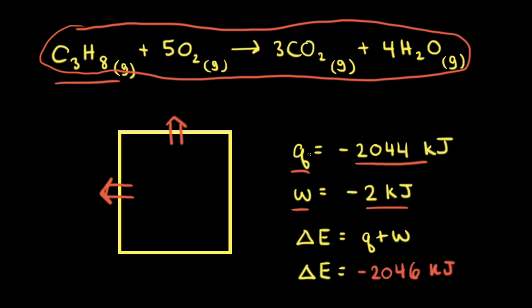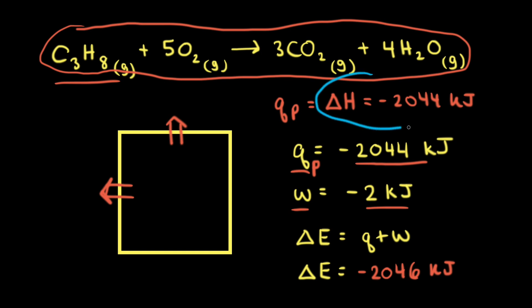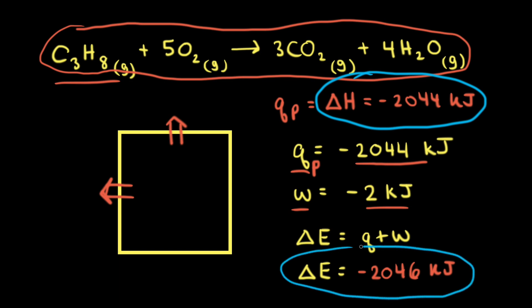Since this reaction was carried out under constant external pressure, we write Q sub p, which is the heat transferred at constant pressure, and that equals the change in enthalpy, symbolized by delta H. So the change in enthalpy for the combustion of propane equals negative 2,044 kilojoules. Notice that the change in enthalpy is almost the same as the change in internal energy — the work done is a very small amount, which is usually the case. Since most chemical reactions are done under constant pressure, chemists care more about the change in enthalpy than the change in internal energy.